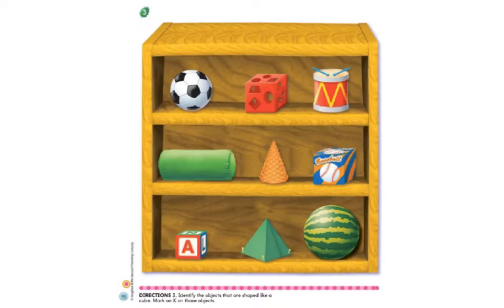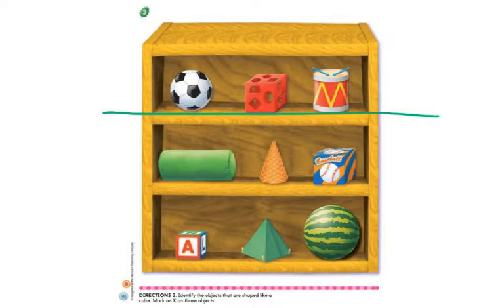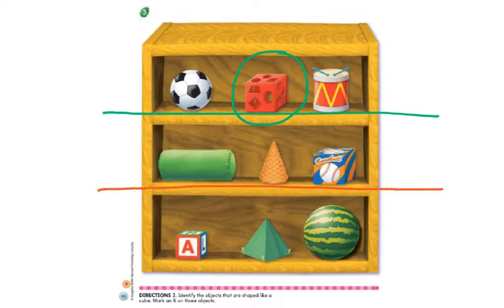Now we're going to move on to identifying cubes. We're going to go through each row and you're going to point to the cube. In our first row we have a soccer ball, looks like a toy, and a drum. Which one of those is a cube? Go ahead and point to that for me. This one right here is our cube. Let's move to the middle row — looking at each one of those, it looks like we have a pillow, an ice cream cone, and a box with a baseball in it. I want you to point to the shape that is a cube.